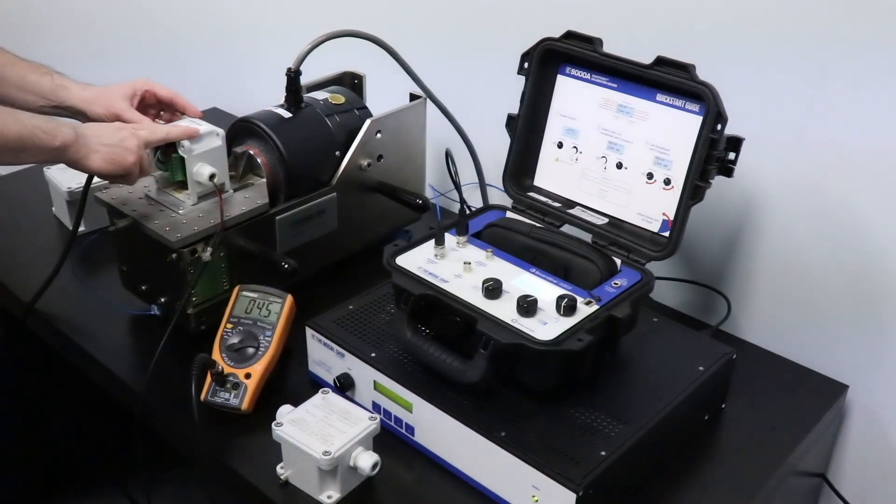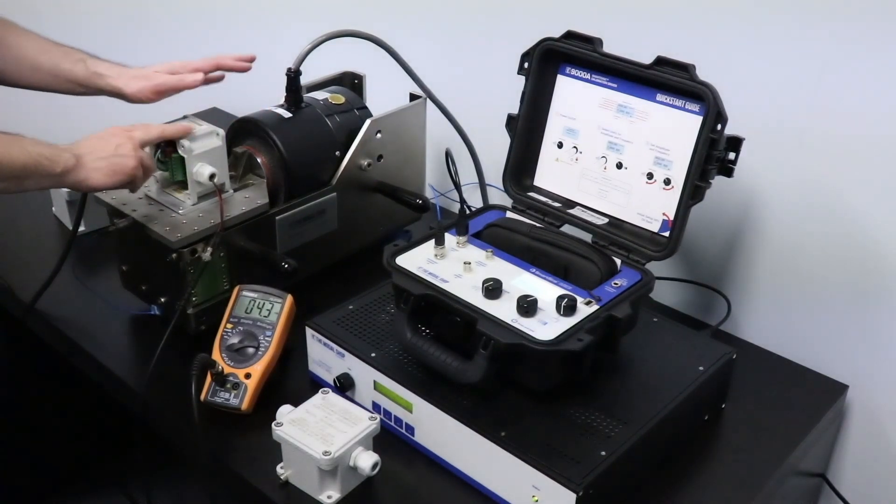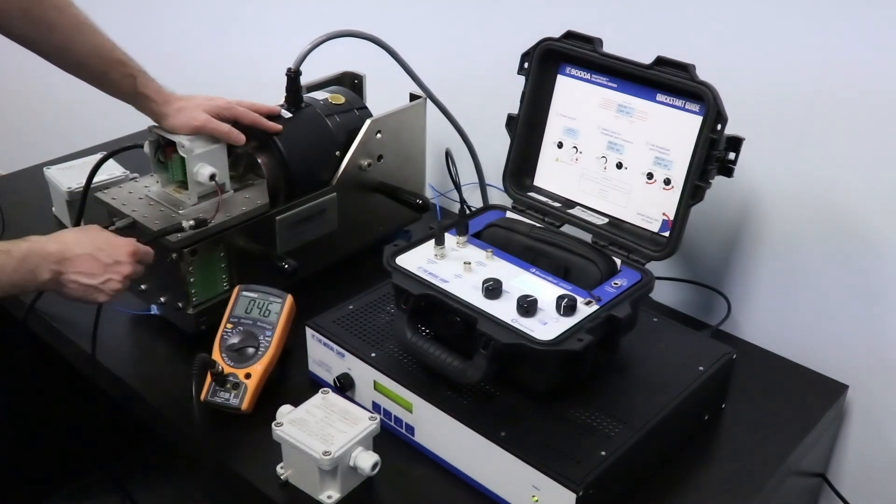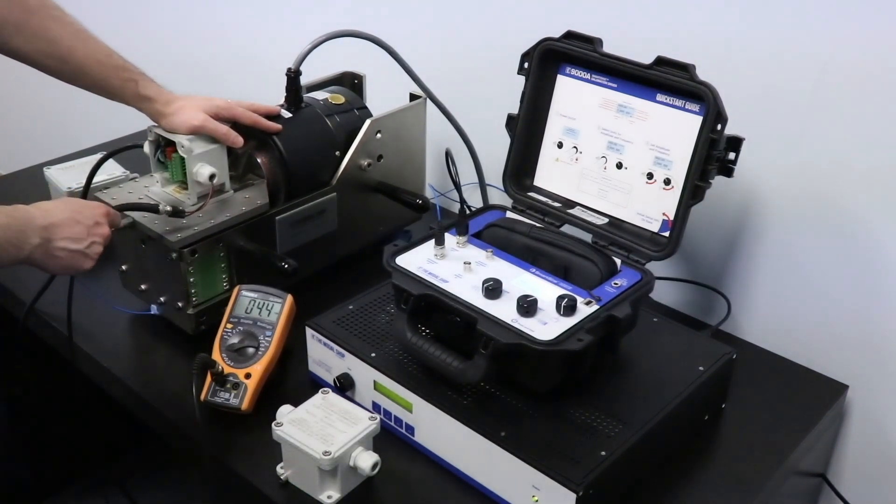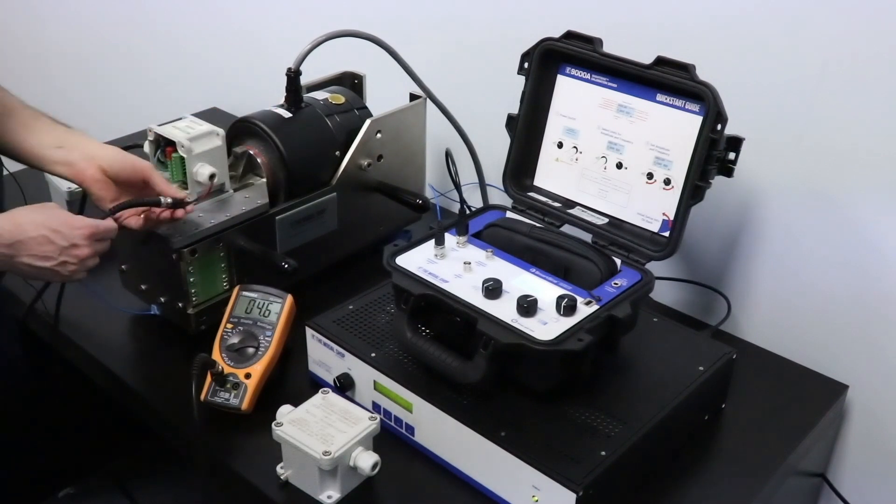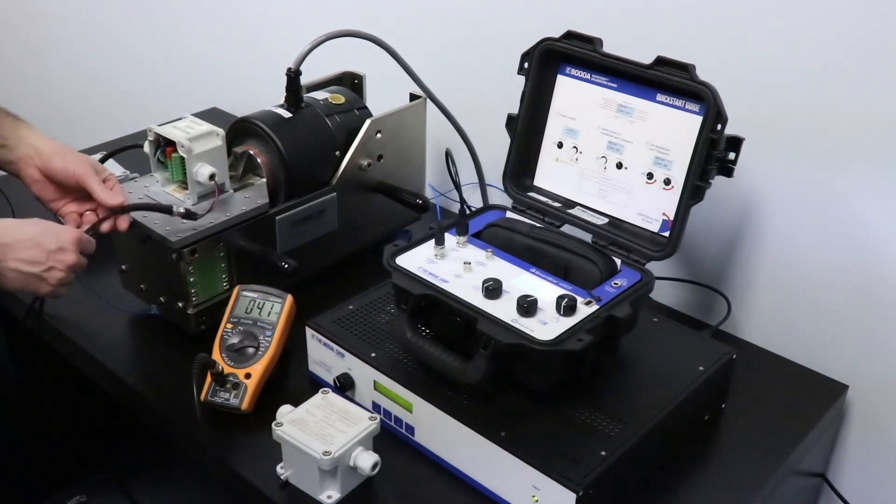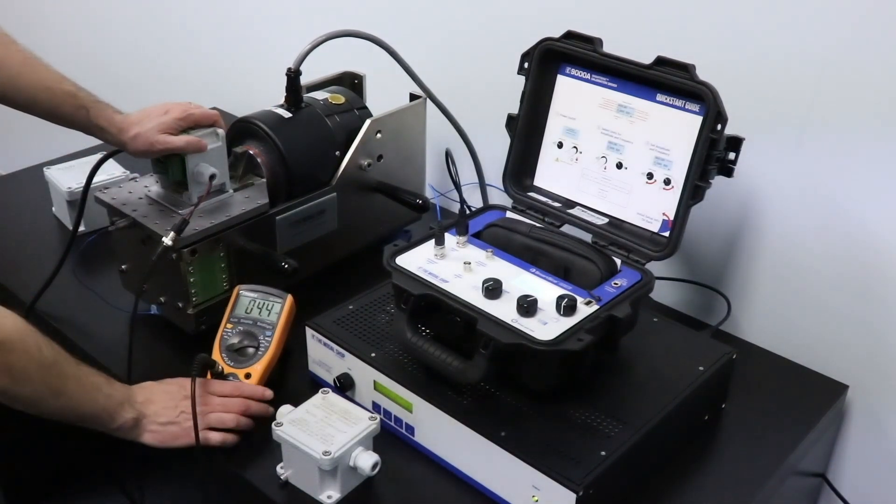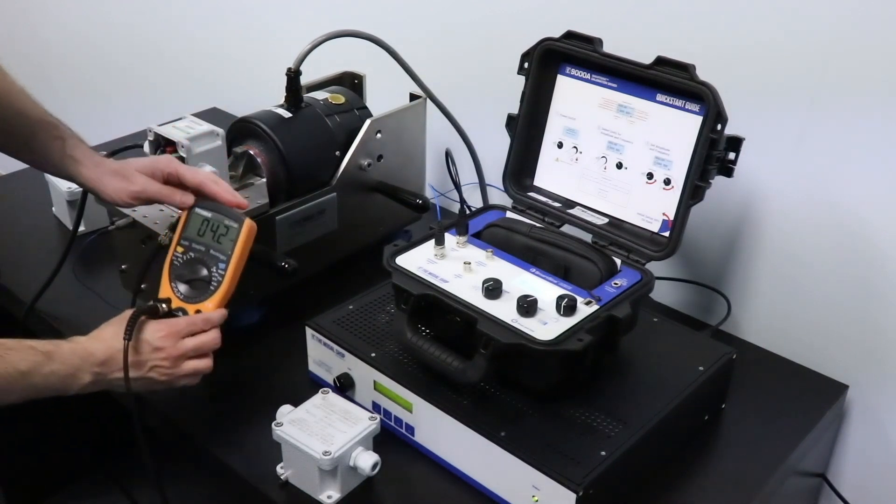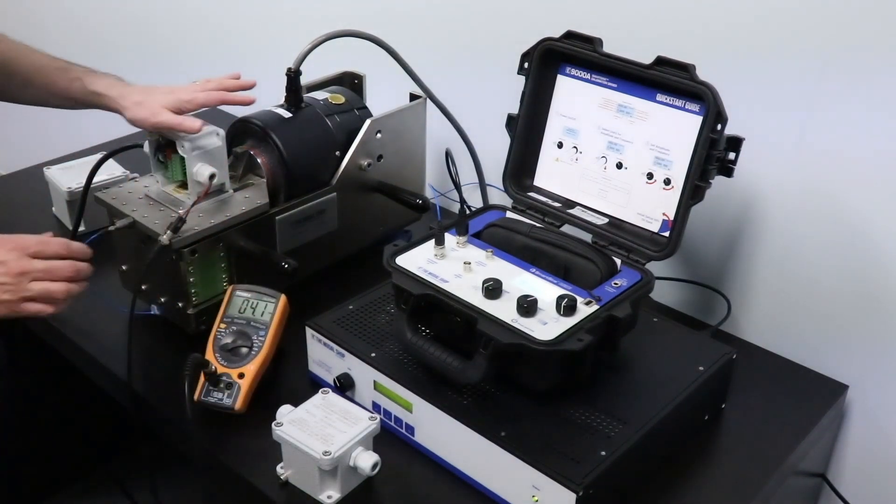So this particular switch is normally connected to a PLC or a DCS. And I have a current output coming out of it. So I'm monitoring that using this little current meter. I'm reading four milliamps right now, which means there's no vibration.